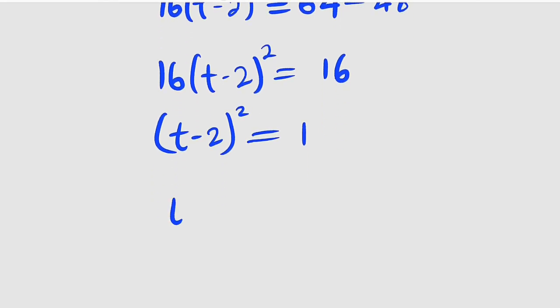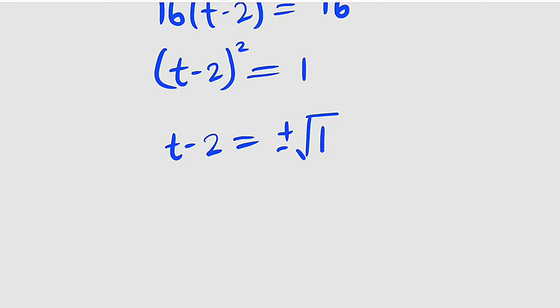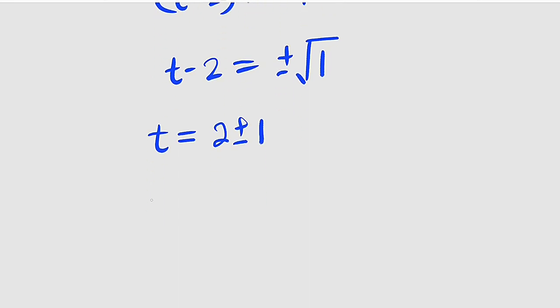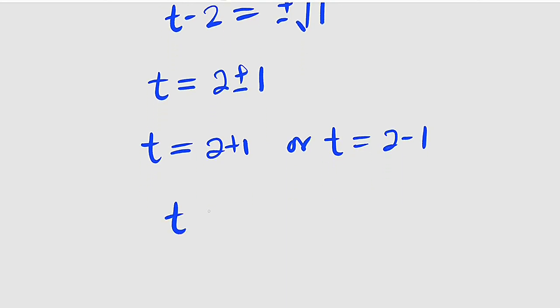Take the square root of both sides. You have t minus 2 equal to plus or minus the square root of 1, which is the same thing as 1. Take negative 2 to the right-hand side. t will now be equal to positive 2 plus or minus 1, because square root of 1 is 1. So finally, the time that we are looking for is equal to either 2 plus 1 or 2 minus 1. So time could either be 3 seconds or 1 second.